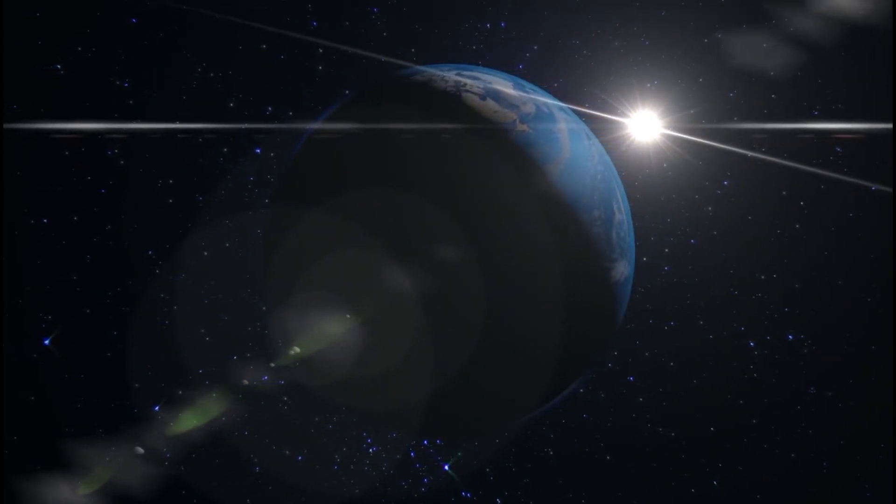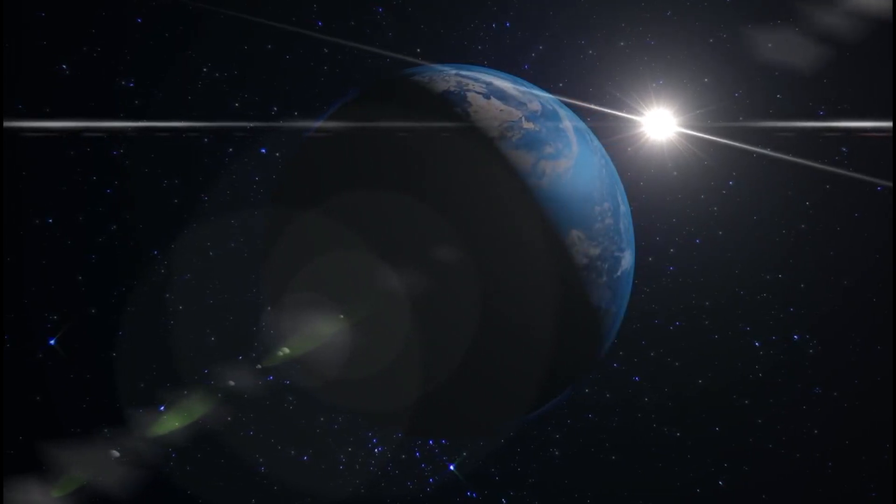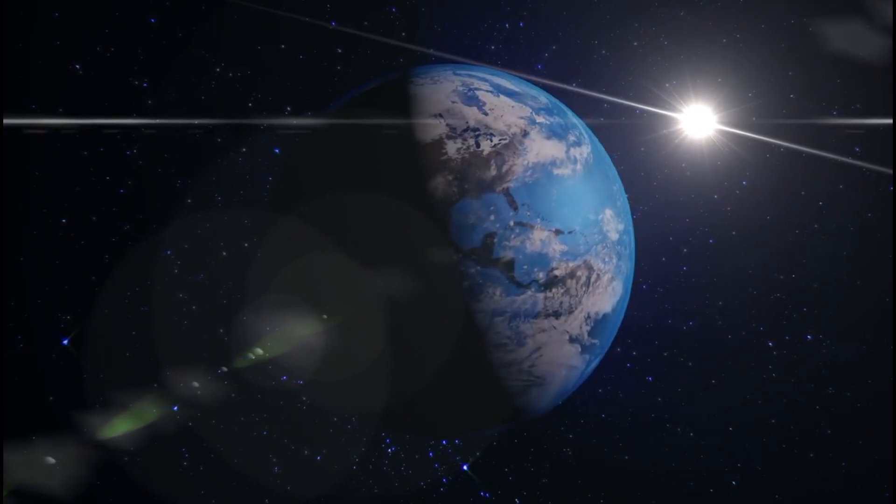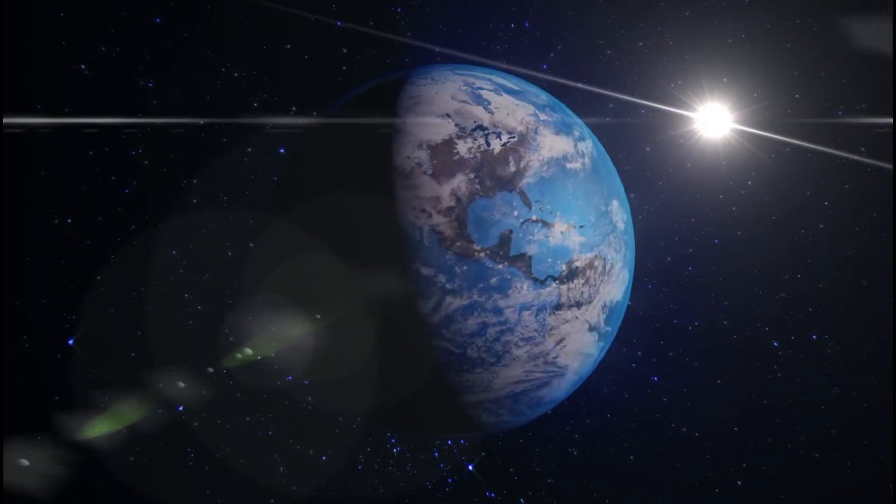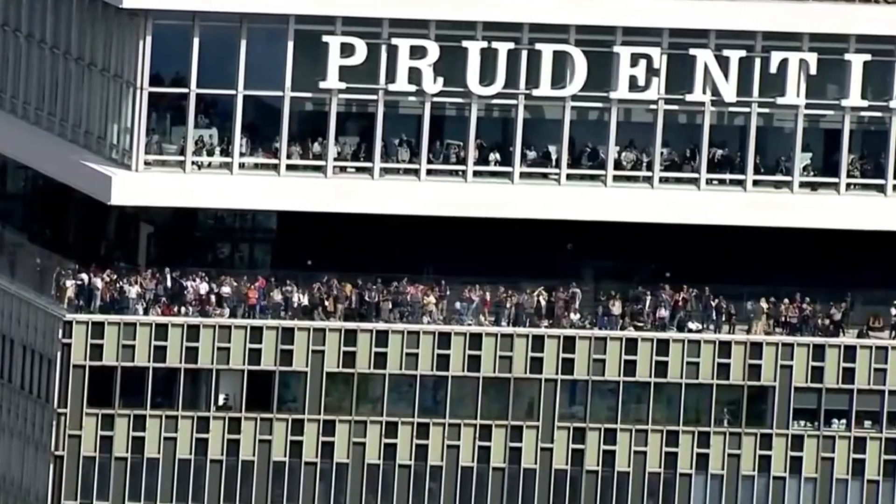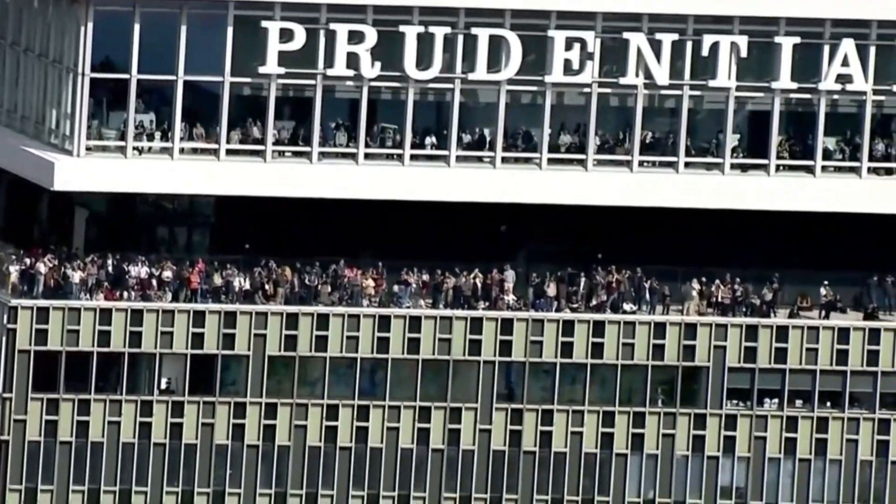When preparing for the solar eclipse, it's essential to familiarize yourself with and adhere to local regulations to ensure a safe and respectful viewing experience. Here are some key guidelines to keep in mind. Start by researching any specific rules or restrictions imposed by the eclipse viewing location. Some areas may have designated viewing zones, parking regulations, or guidelines for behavior during the event. By understanding and following these regulations, you can help maintain order and ensure a harmonious eclipse viewing environment for all attendees.